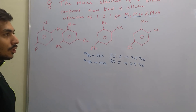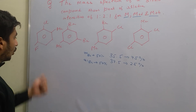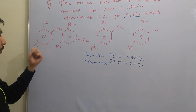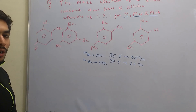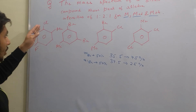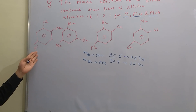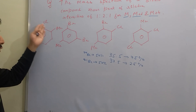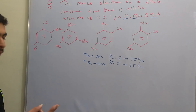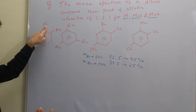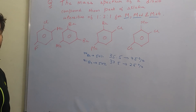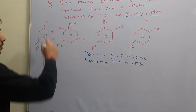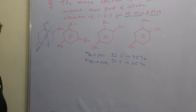We are obtaining a molecular ion peak of M+4. Looking at the first option — one chlorine and one fluorine — fluorine does not have a higher isotope, and chlorine's higher isotope adds only plus 2. Since there is only one chlorine, there is no chance of getting a molecular ion peak of M+4. The maximum you can get is M+2. So the first option can be cancelled out without even solving anything.